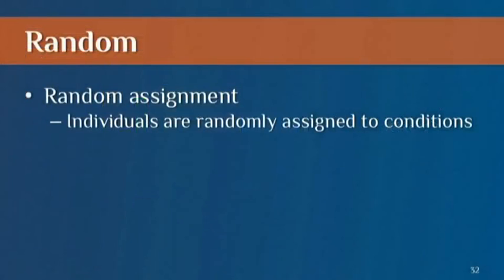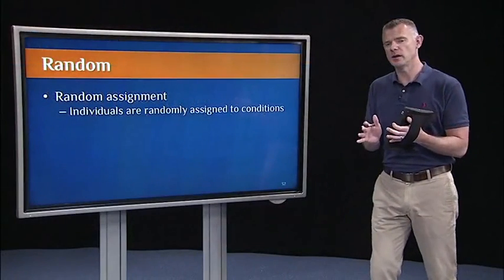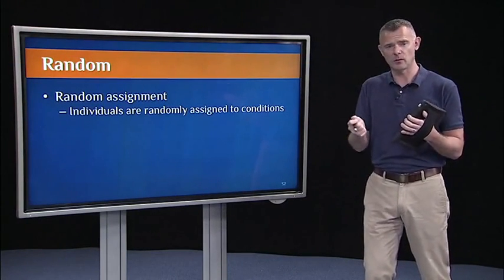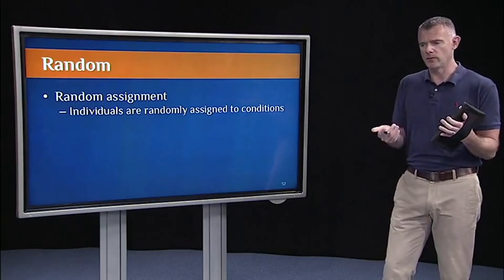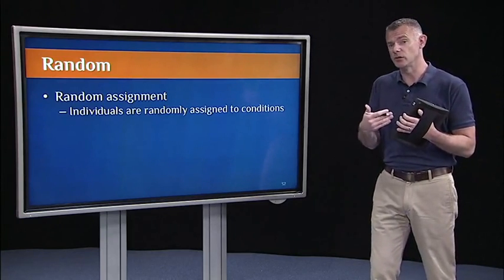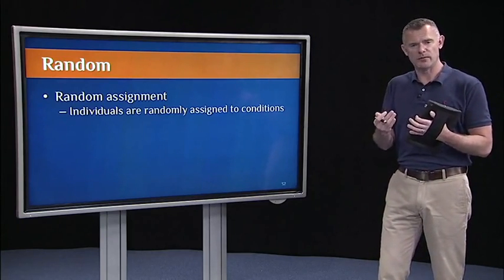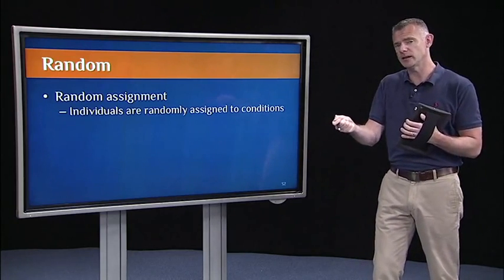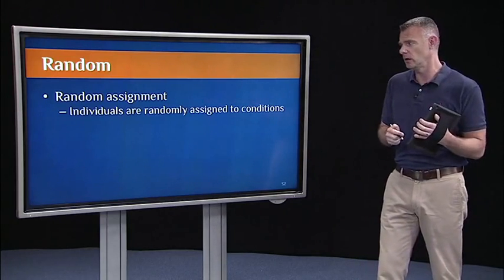So that was random selection from the population. Experiments also depend on random assignment to conditions. So we want there to be a 50-50 chance, for example, that a child gets either the vaccine or the placebo. Or, for example, that a subject coming in to do memory training, we want there to be a 50-50 chance that they get assigned to either the true memory training condition or a control condition.